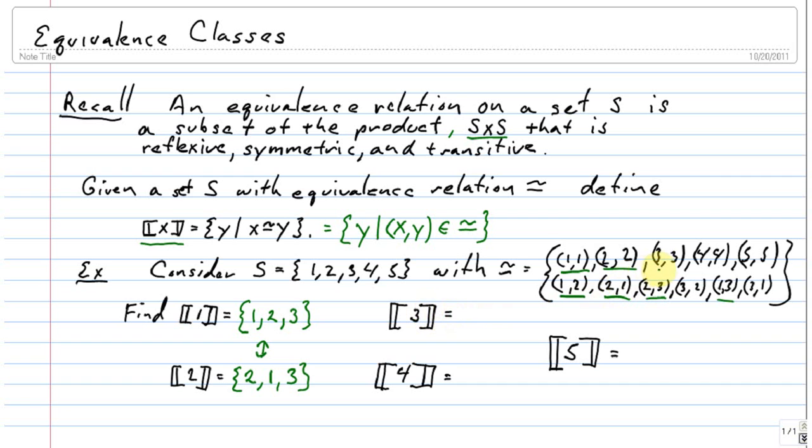And we can do 3 as well. So 3 is related to 3. 3 is related to 2. And 3 is related to 1. Again, they have the same set there.